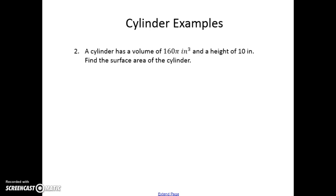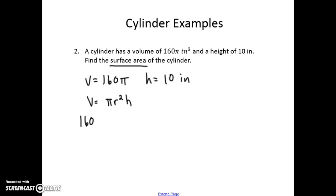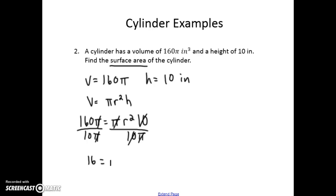In problem 2, the cylinder has a volume of 160π inches cubed and a height of 10 inches, and we want to find the surface area. Since volume equals πr²h, we plug in: 160π = πr²(10). Dividing both sides by 10π gives r² = 16, and since we ignore the negative root, r = 4.